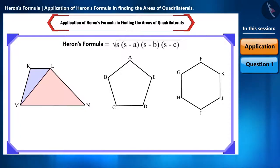Now, by using Heron's formula in both of them, we can find their area. And adding them up, we can find the area of this quadrilateral.